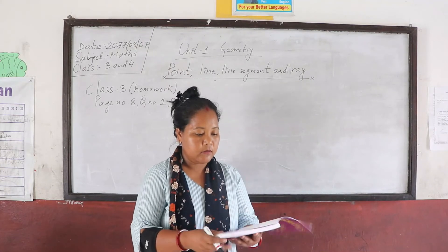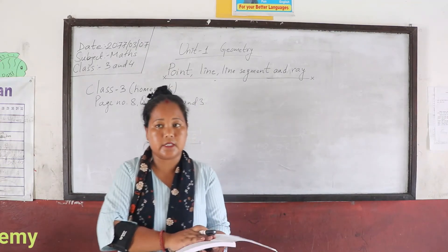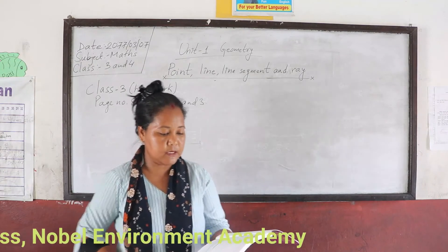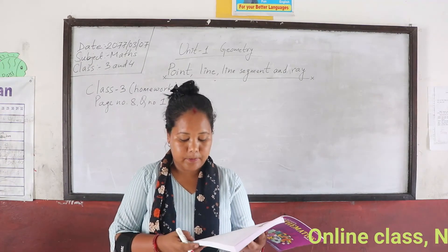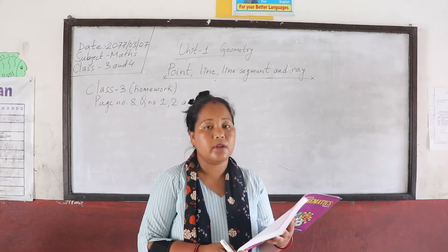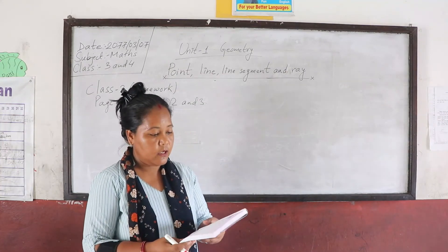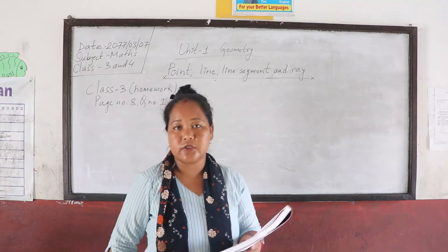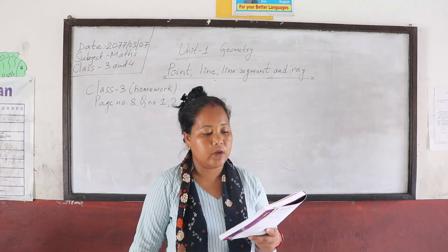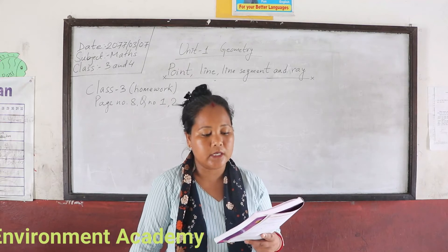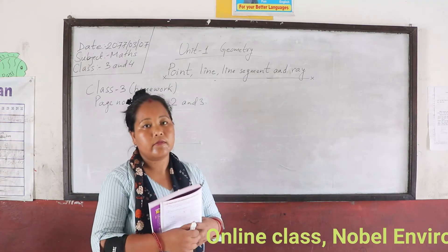In page number 7 there is the class assignment for class 4. Question number 1 is a very easy question: identify whether the given figures are point, line, line segment, or ray. There are pictures labeled A, B, C, and D.